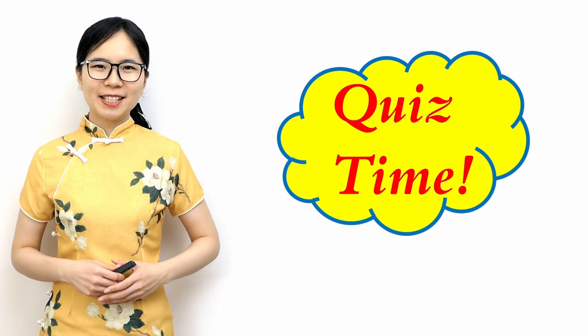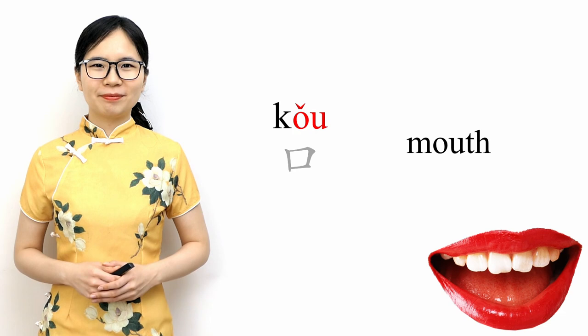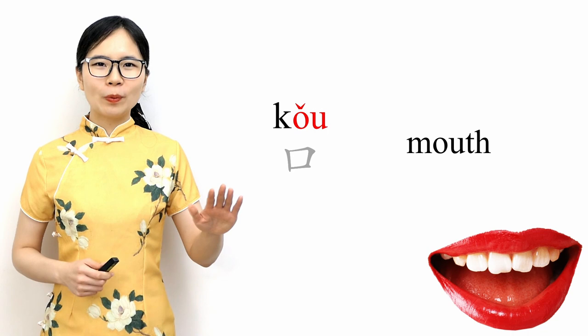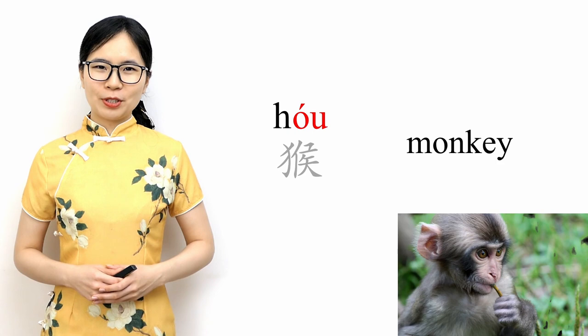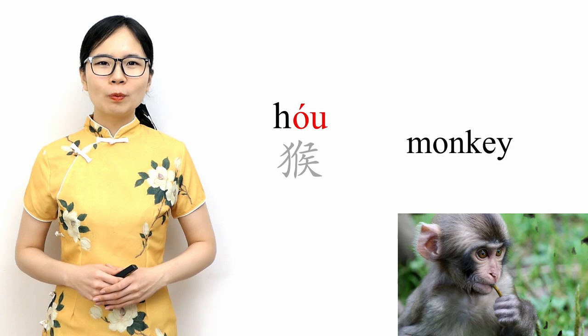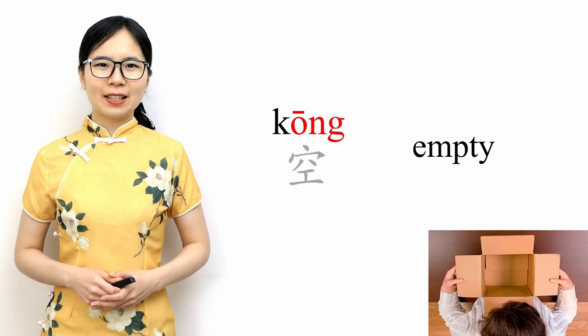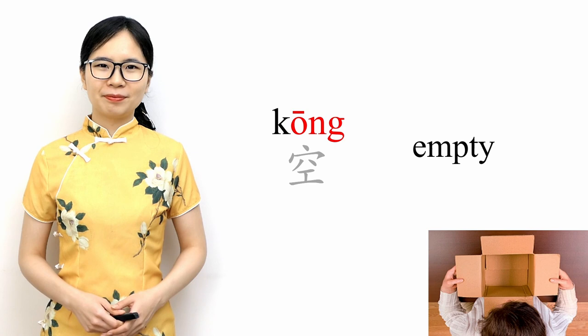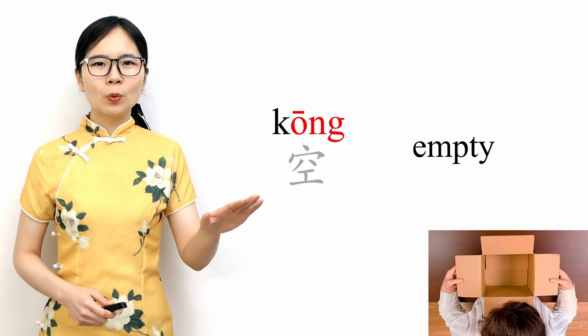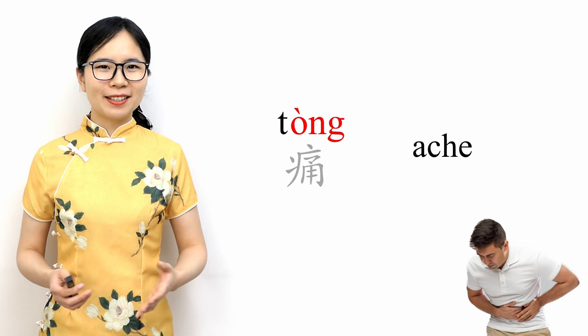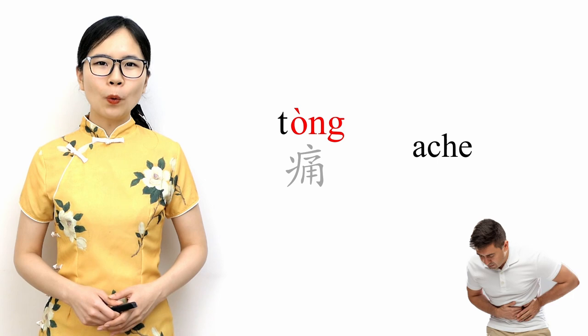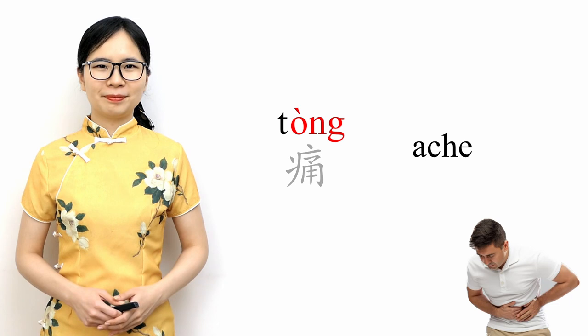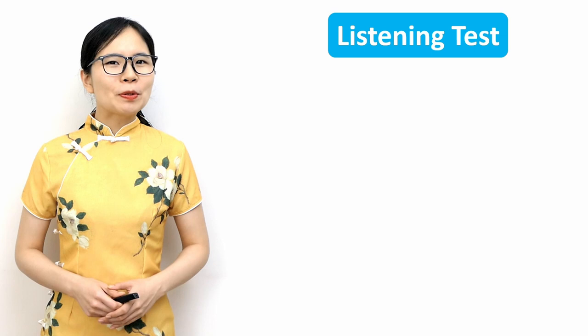And if I use the initial 'd' and the third tone, then we get 'dǒng', which means understand. That covers the two compound finals starting with 'o'. Let's have a quiz. How should this word, which means mouth, be pronounced? That's right, this is 'kǒu'. How about this word which means monkey? That's right, this is pronounced 'hóu'. How about this word which means empty? Correct, this is 'kōng'. And how about this word which means egg? That's right, this is 'tóng'.